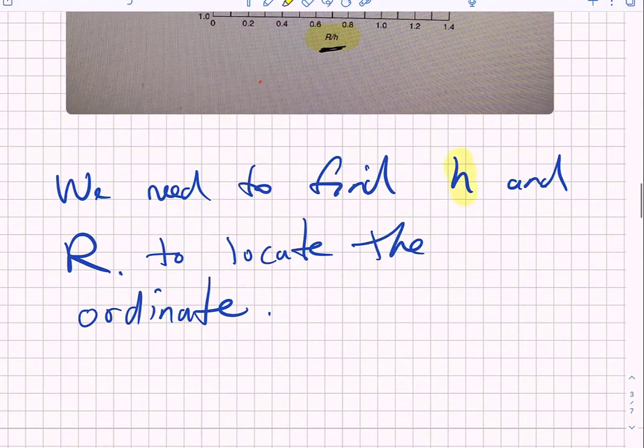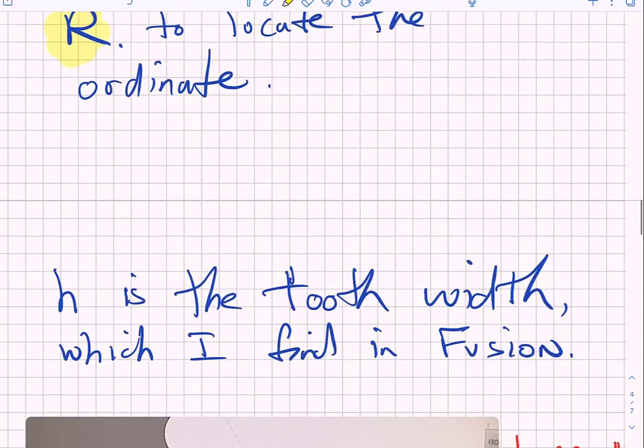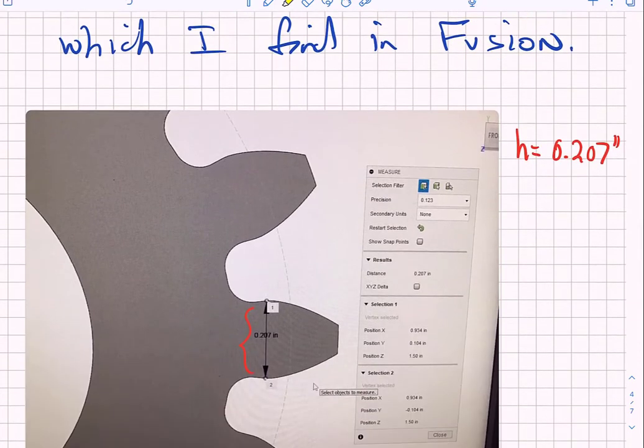So we need to know H and we need to know R in order to figure out where we're going to be on this SCF curve. So H is the tooth width which if I go into fusion and open the measure tool I can figure out that the tooth width is 0.207 inches.